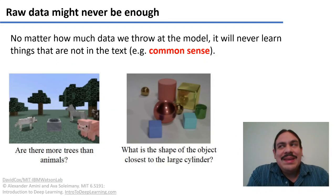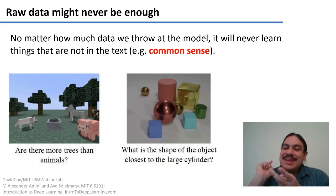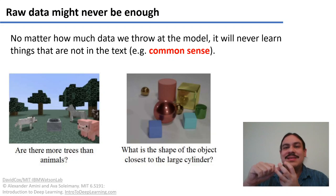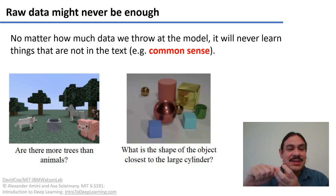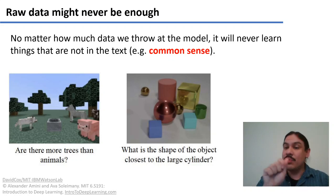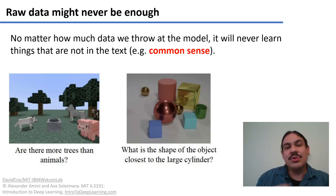So even with 40 gigs of data, even with all the Wikipedias, even if we manage to make the networks more resilient, there's still so much in the world that is never written down in input text, and so the computer could never be able to access this knowledge.